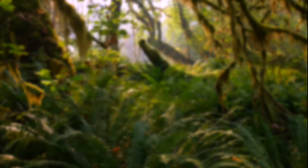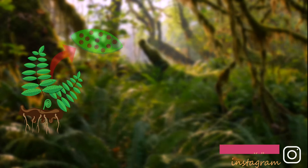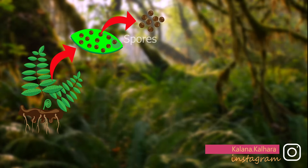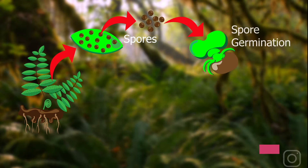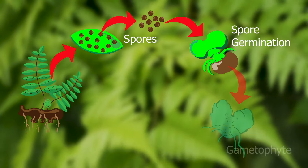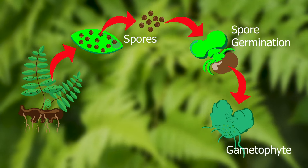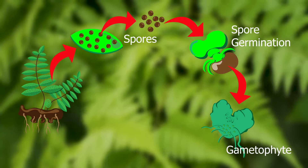The leafy fern plants we see in the bush that produce spores are sporophytes. When the spores are released by the sporangia, if they land in a hospitable environment, they can grow into a tiny plant: the gametophyte.